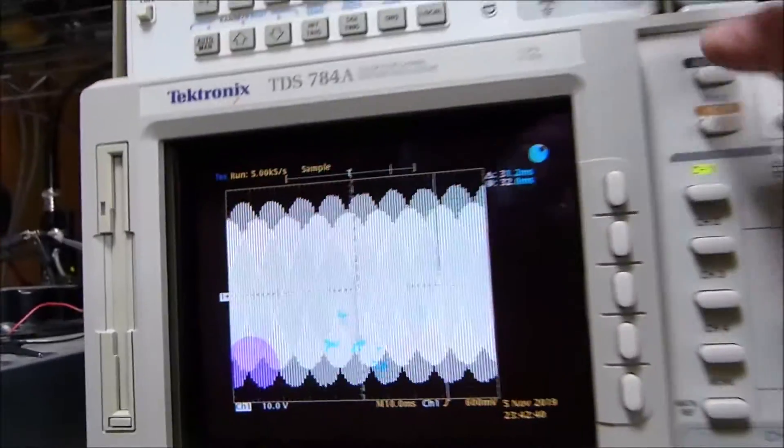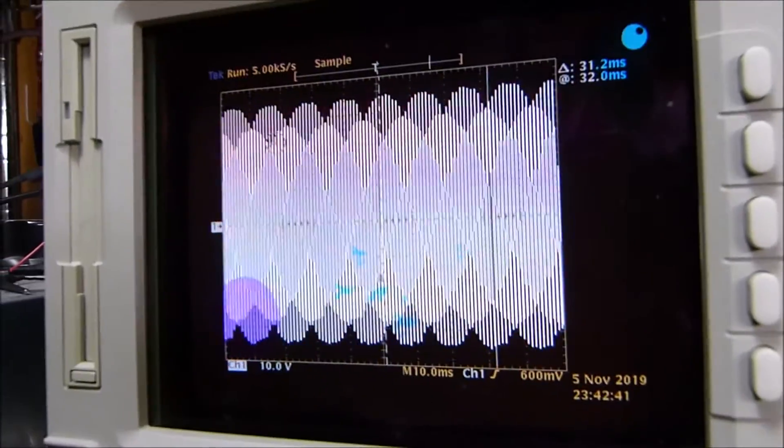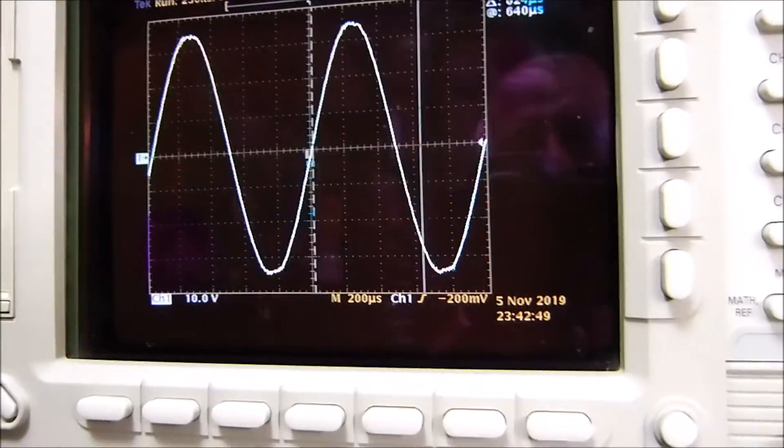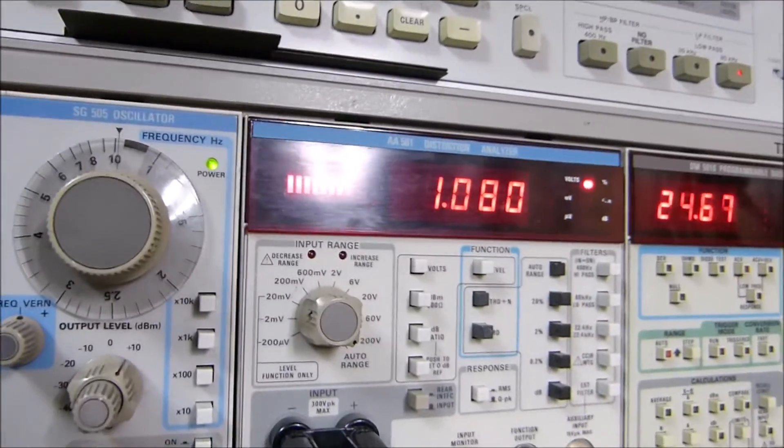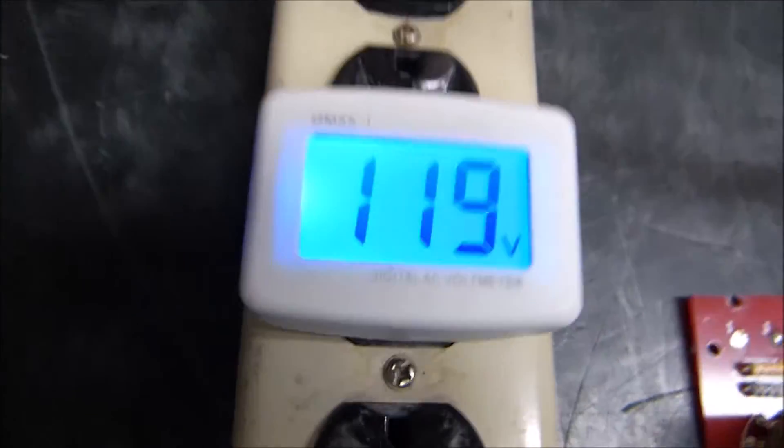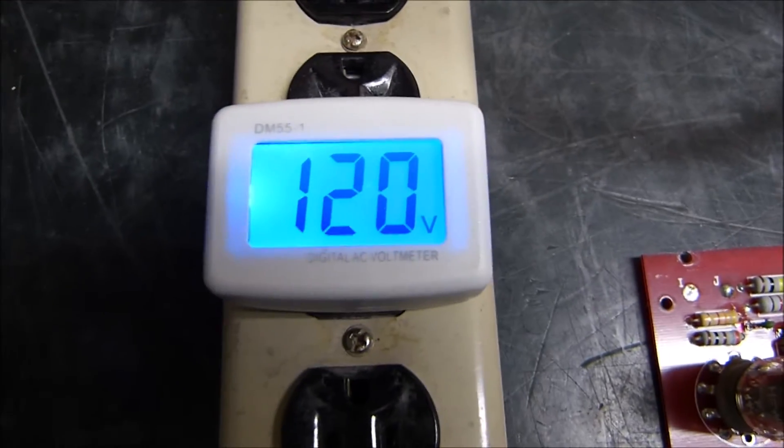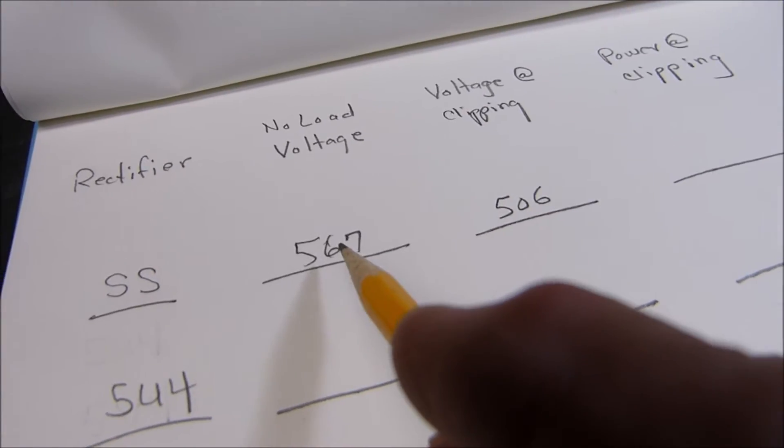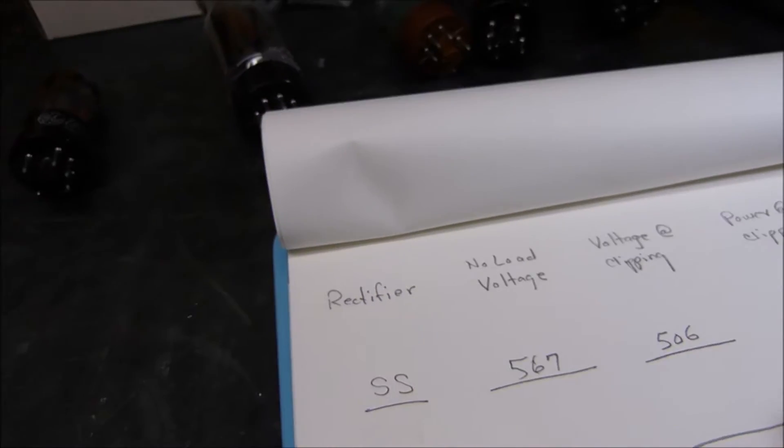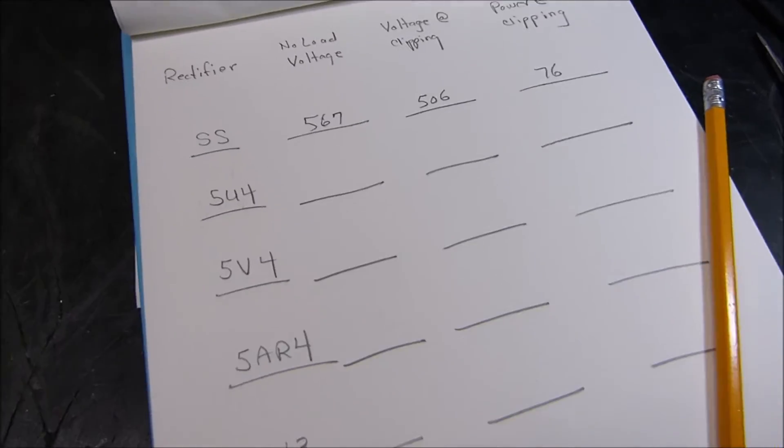Let's do auto set on this guy. There we go, let's stretch it out one more time. Okay, that looks pretty good. There it is right there, 76 watts at right at one percent. If we lower just even a tiny bit, the distortion goes down significantly. And our input voltage is right now at 119. Let's raise that to one volt, there we go, 120 everything. We got to keep everything the same, 120 volts. And our voltage now is 50, we'll round that up to 506. 506. But you can see we dropped 60 volts even with the solid state rectifiers. And our clipping power is 76 watts.